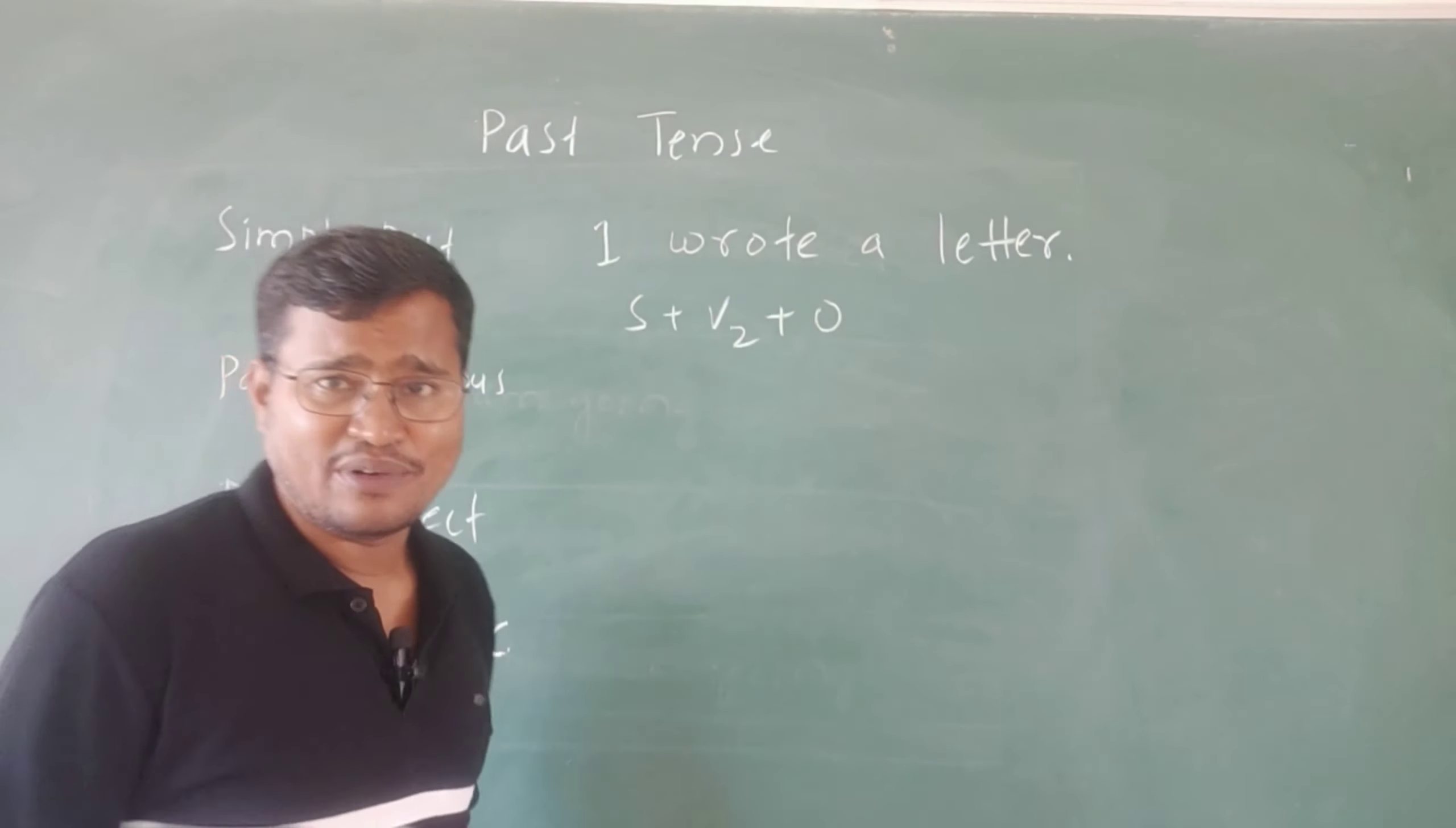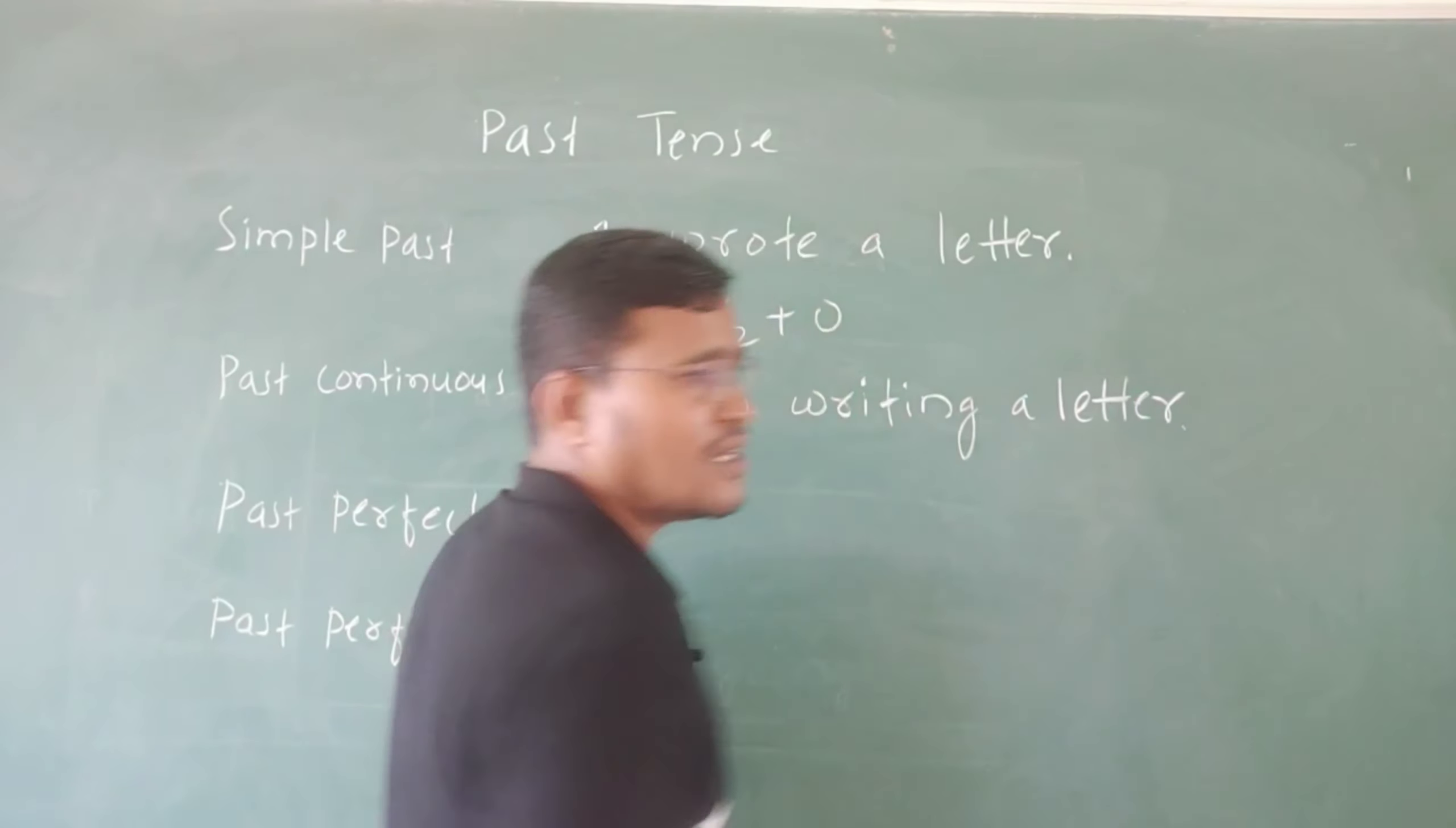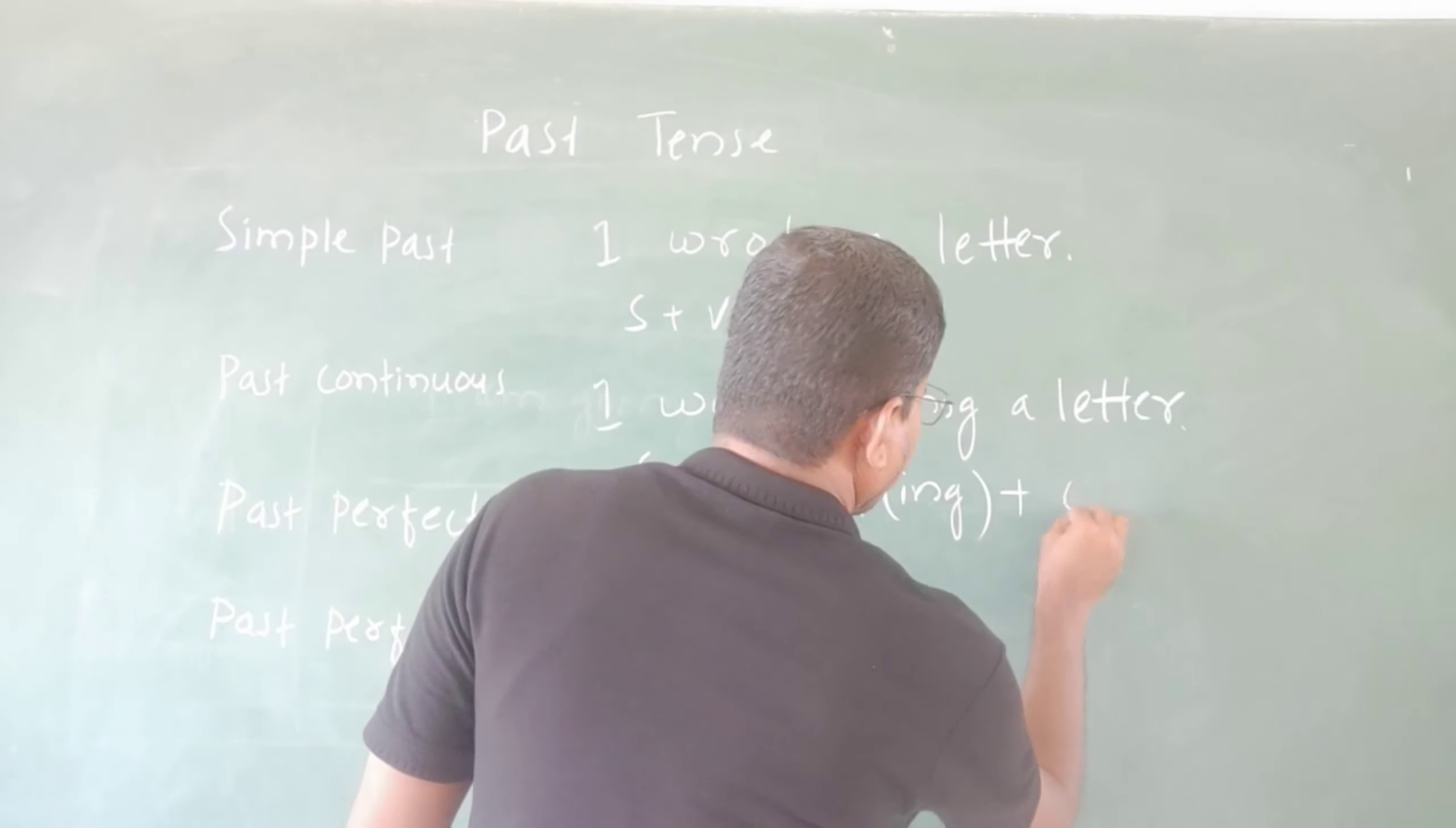Next is past continuous: 'I was writing a letter'. The formula is subject plus helping verb plus V1 plus ing, and then the object.